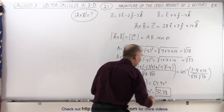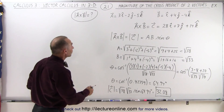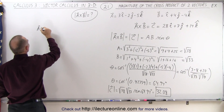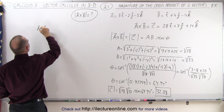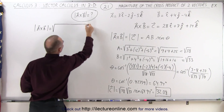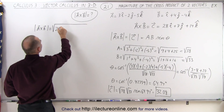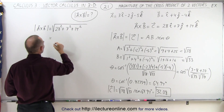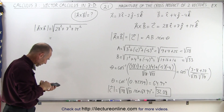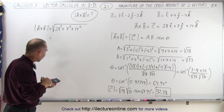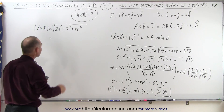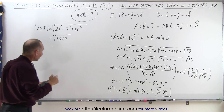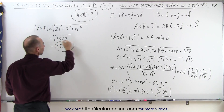To check that result, we'll take the magnitude of the result vector directly. The magnitude of a cross b equals the square root of the sum of the squares of the components: 28 squared plus 7 squared plus 14 squared, which equals the square root of 1029.